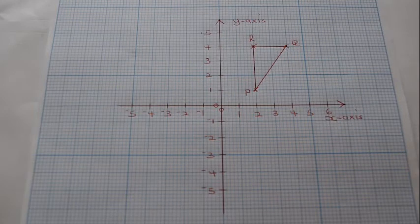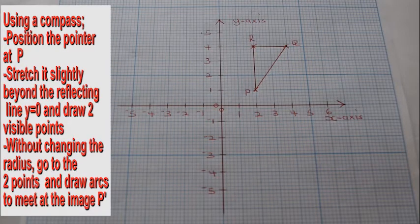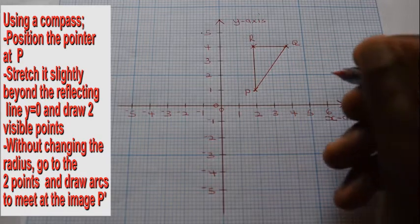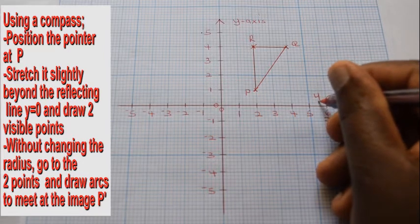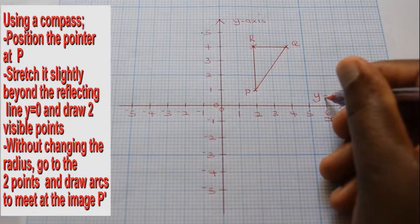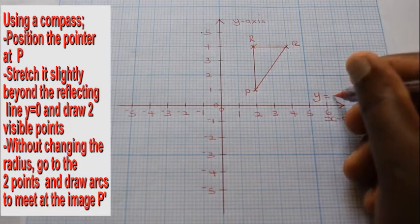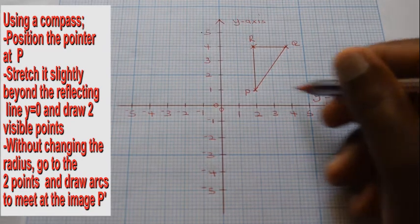Label the reflection line y equals zero along the x-axis. Reflect the object P to R in the line y equals zero.